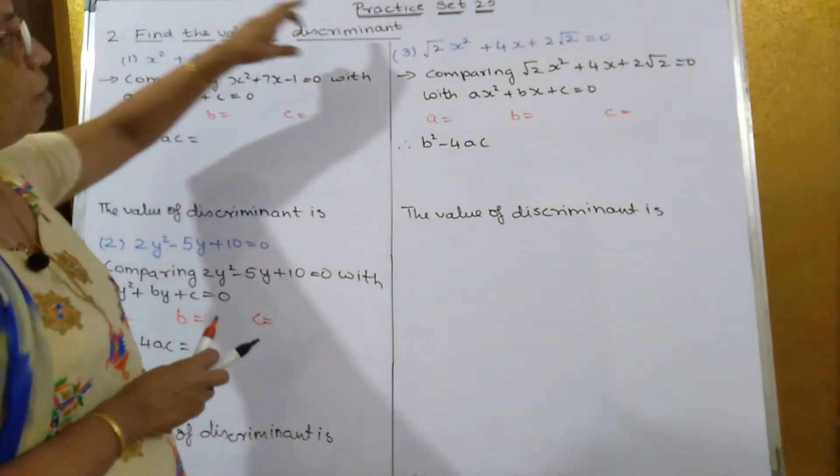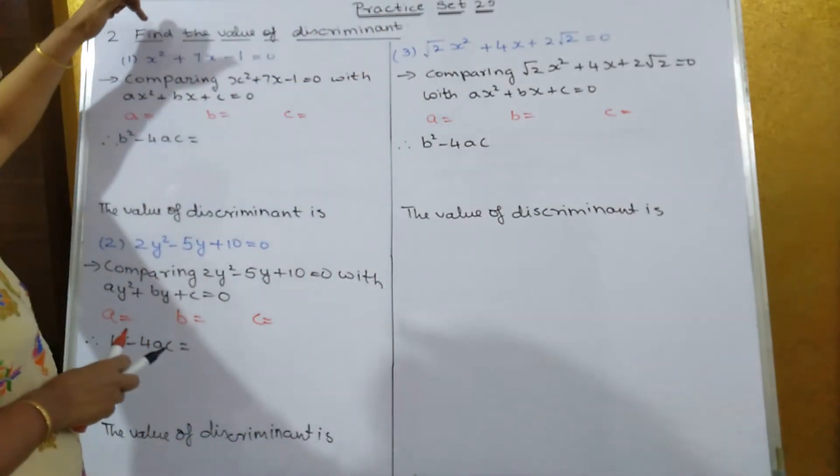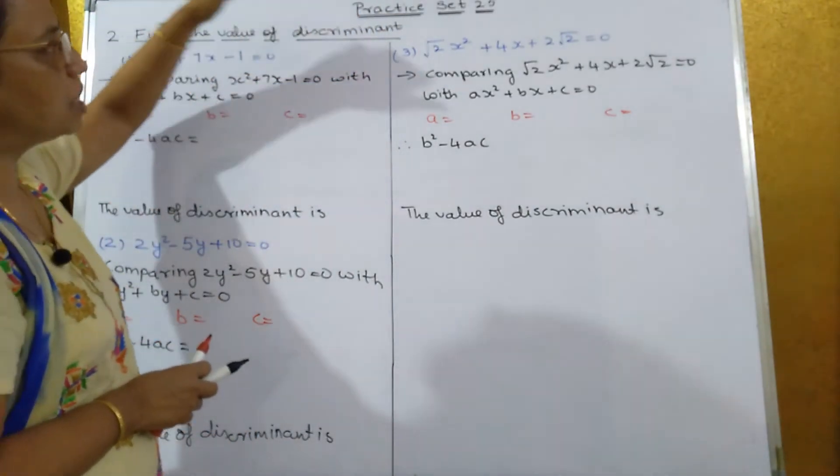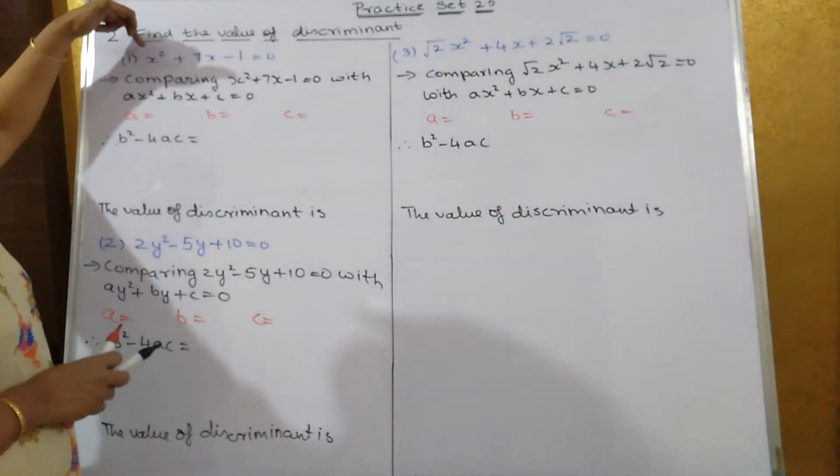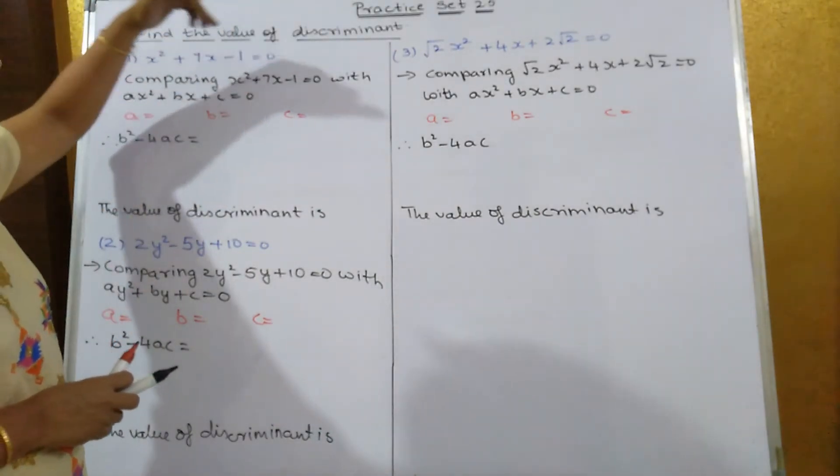Now, the second sum of Practice 2.5: we have to find out the value of the discriminant. So how to find out the value of the discriminant? The first sum is x² + 7x - 1 = 0.